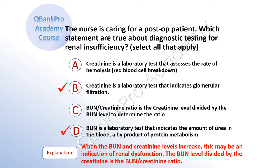The correct answer is B: creatinine is a laboratory test that indicates glomerular filtration. And D: BUN is a laboratory test that indicates the amount of urea in the blood, a byproduct of protein metabolism. Explanation: When the BUN and creatinine levels increase, this may be an indication of renal dysfunction. The BUN level divided by the creatinine is the BUN-creatinine ratio.